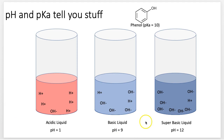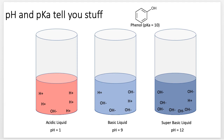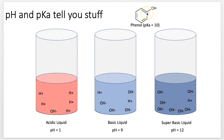Let's do another example with phenol, which has a higher pKa. Acetic acid has a pKa of 5 — relatively acidic, so it generally donates its proton in biological systems, which are usually around pH 7. Phenol has a pKa of 10, so it's less likely to donate its hydrogen. Remember, biological systems like inside the cell or blood are usually relatively neutral, around pH 7. For acetic acid with pKa 5, since 5 is more acidic than 7, it will usually donate its proton.